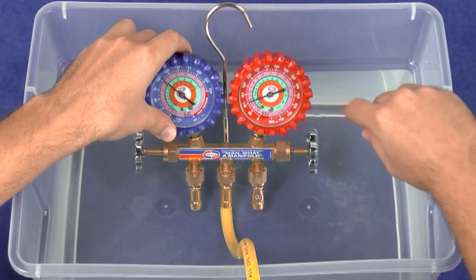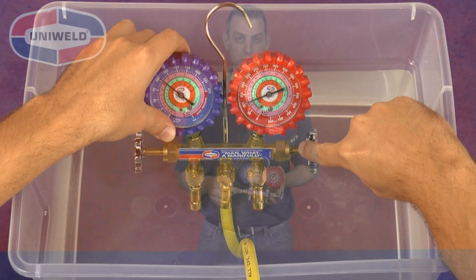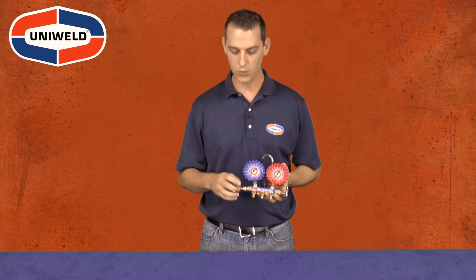After extensive use of the manifold, it is possible to experience some leaking here at the valve connection. A simple fix for this is to retighten this brass packing nut onto the manifold body.